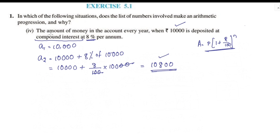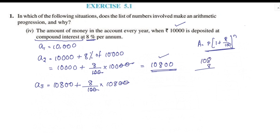For A3, we calculate compound interest: 8% of 10,800 = 864. So A3 = 10,800 + 864 = 11,664.